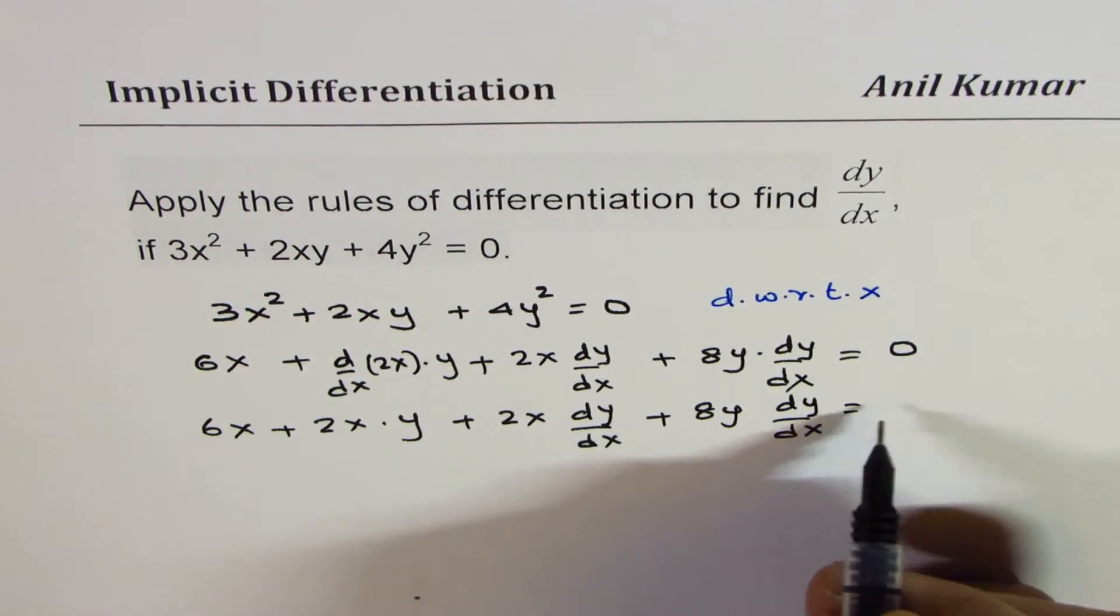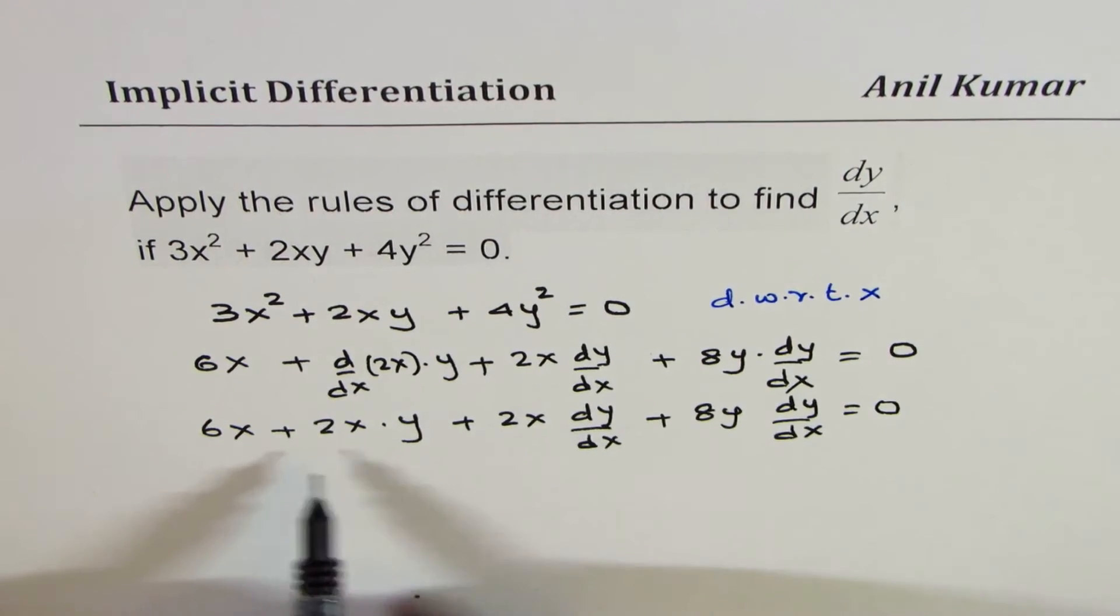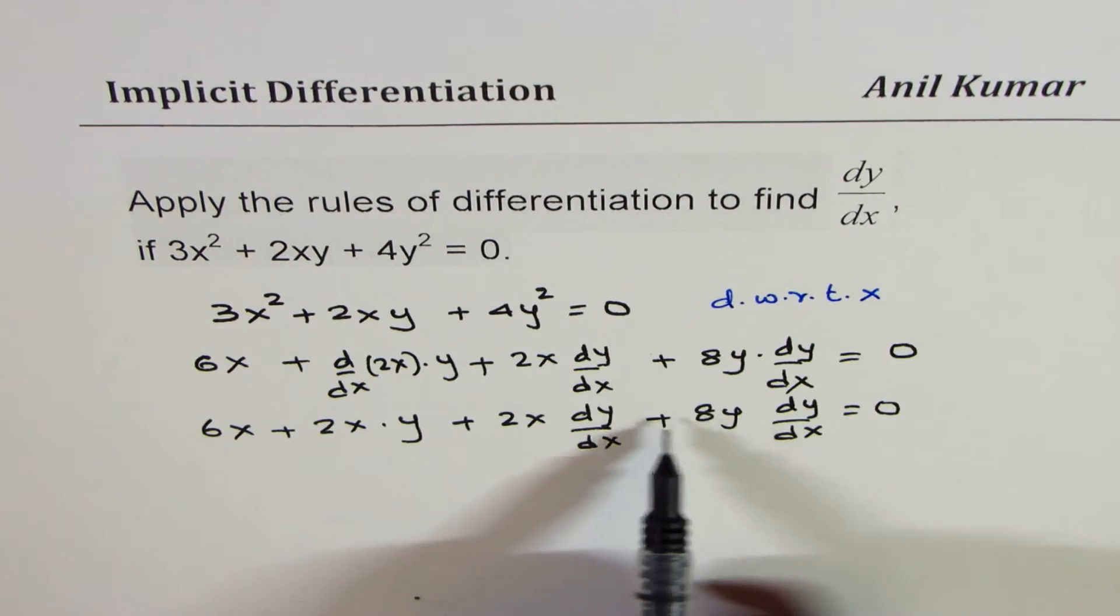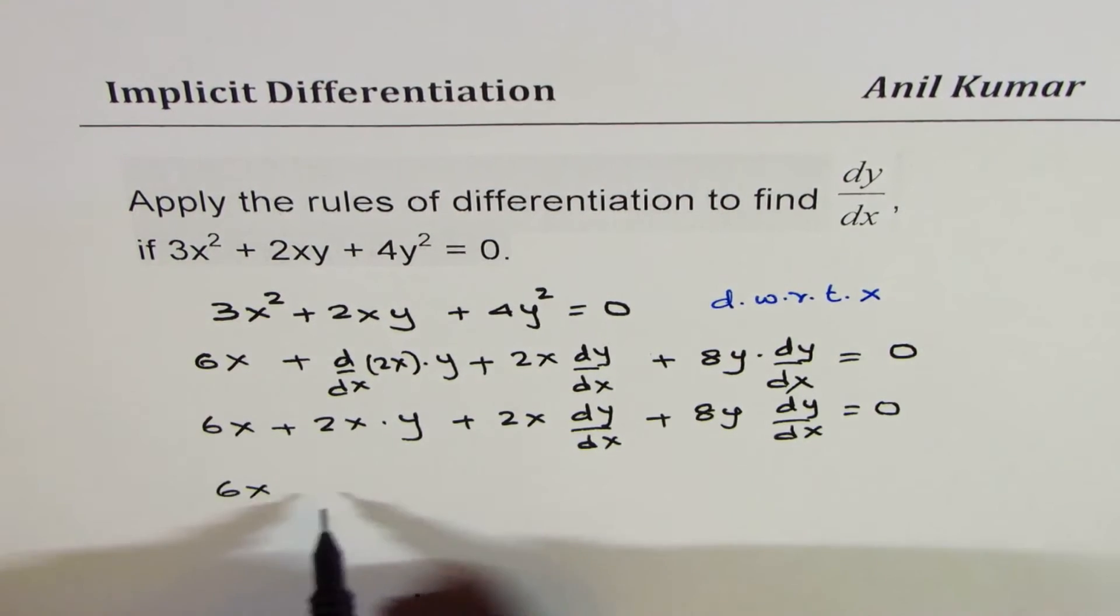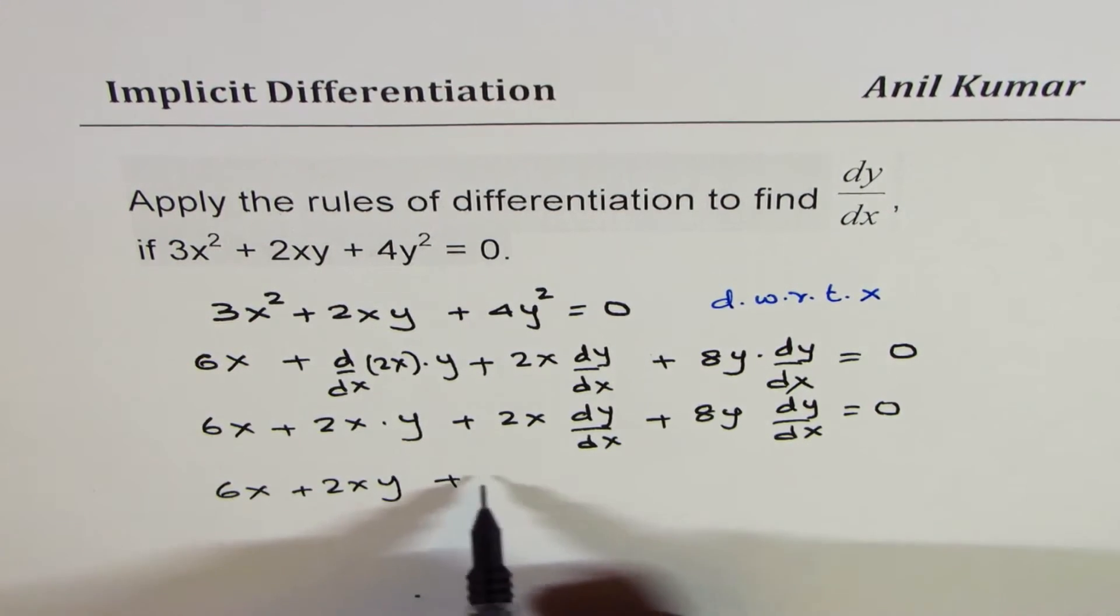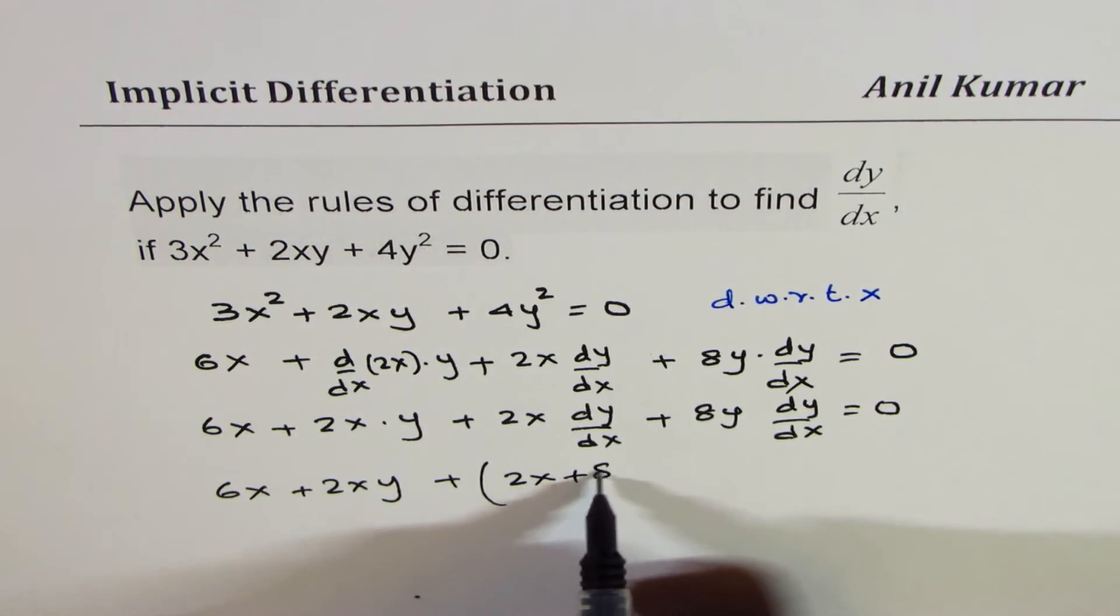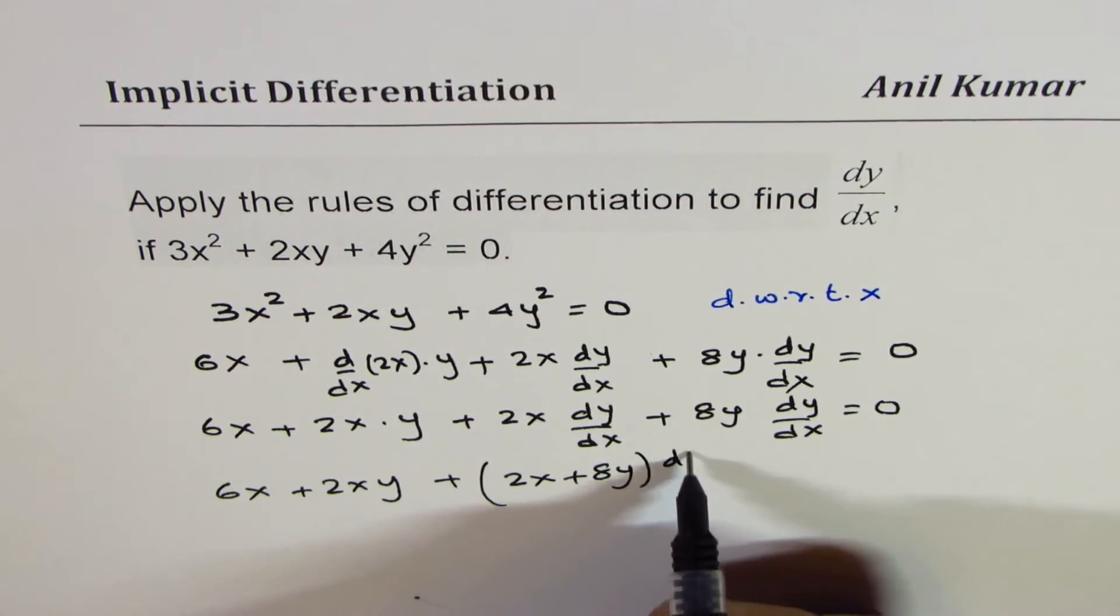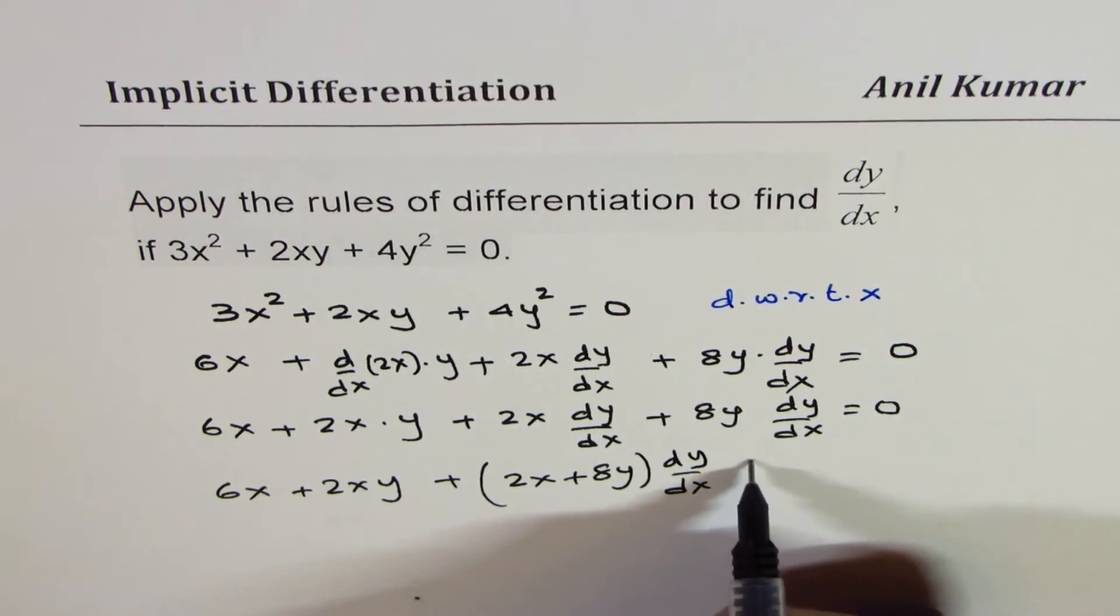So combining dy/dx terms, we get 6x plus 2xy plus we have here 2x plus 8y dy/dx equals 0.